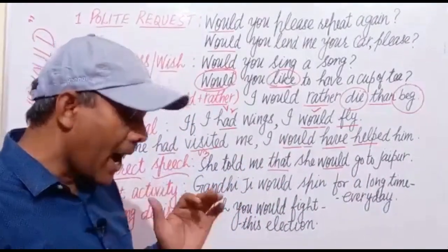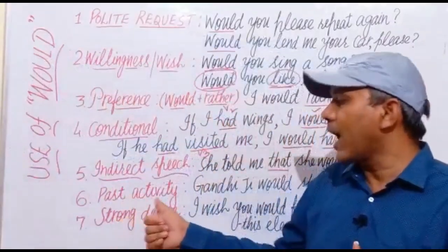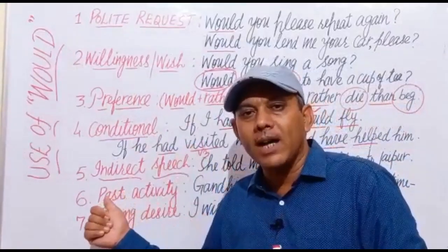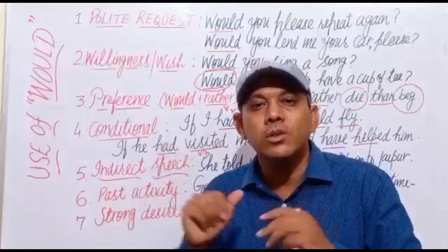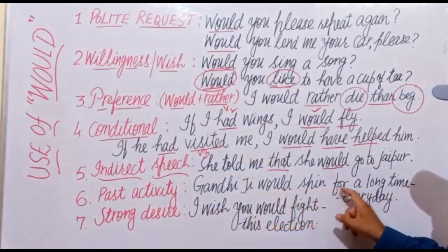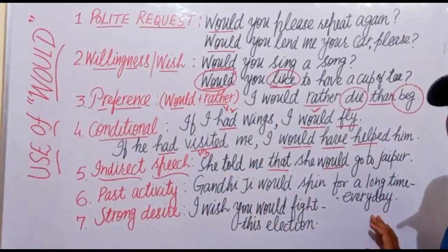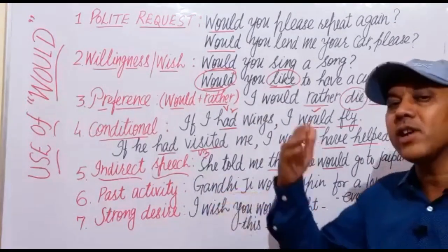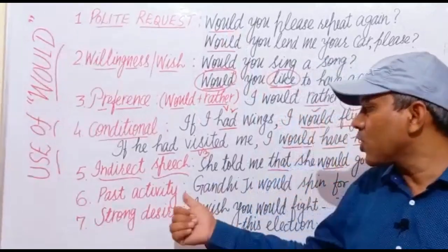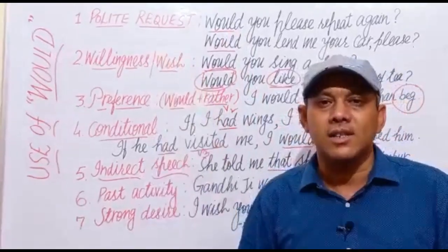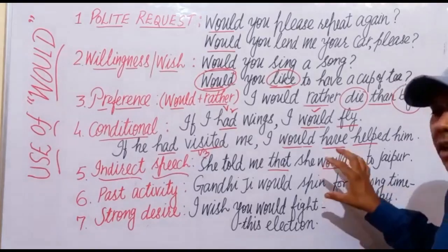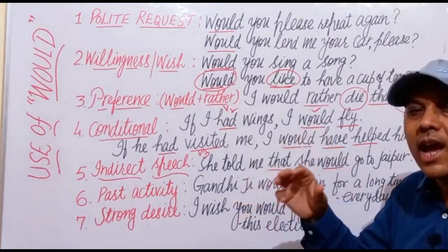The next use is past activity or past habit. For a past habit or action, we use would — we also use 'used to' for past actions. For example: Gandhiji would spin for a long time every day. As we know, Gandhiji passed away in 1948 and is no longer alive. Spinning was his past habit. We use would to express a past activity or past habit of someone.